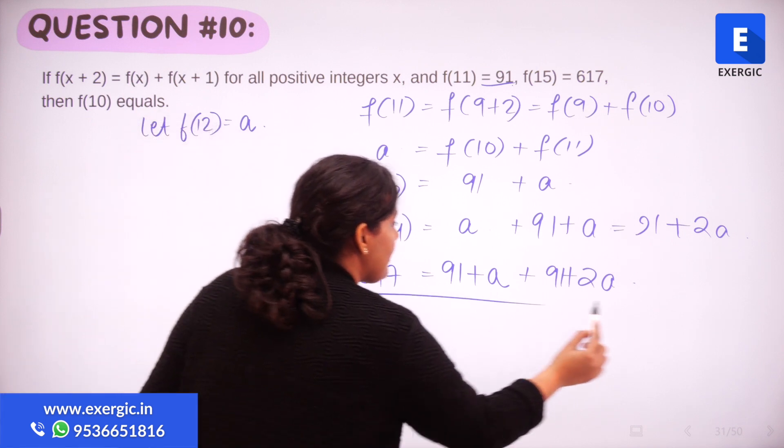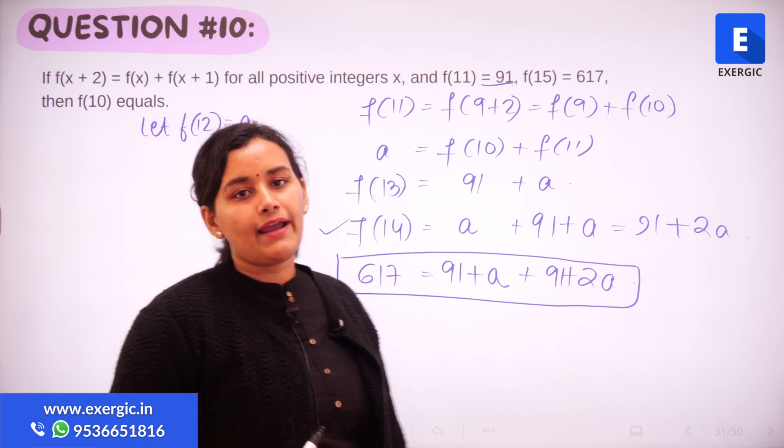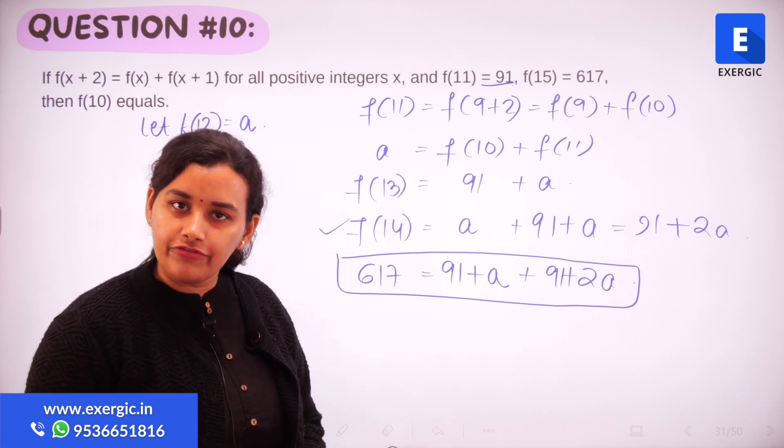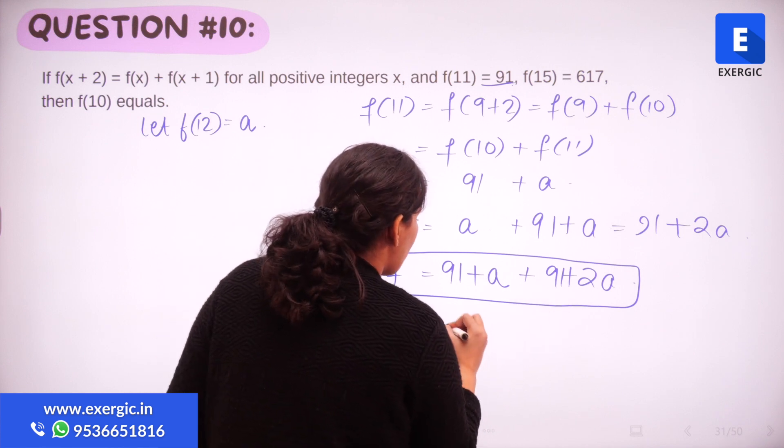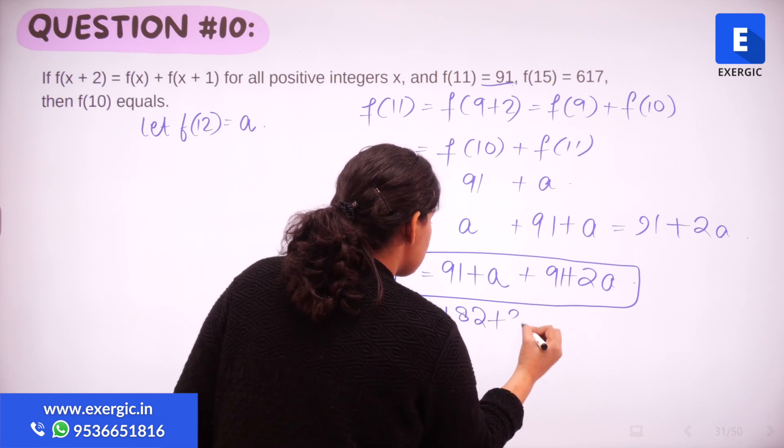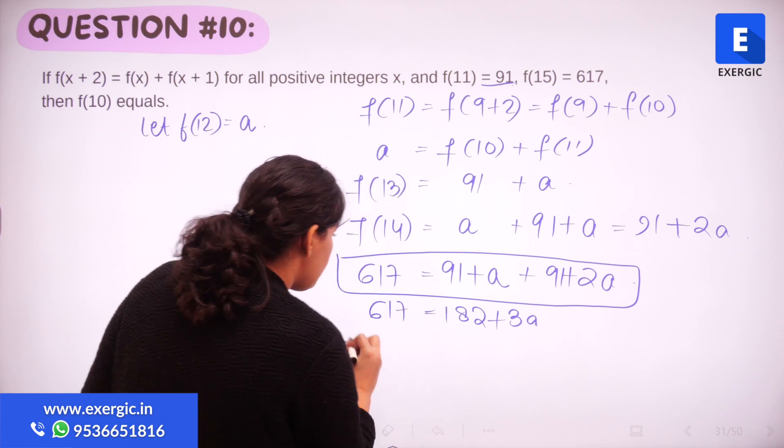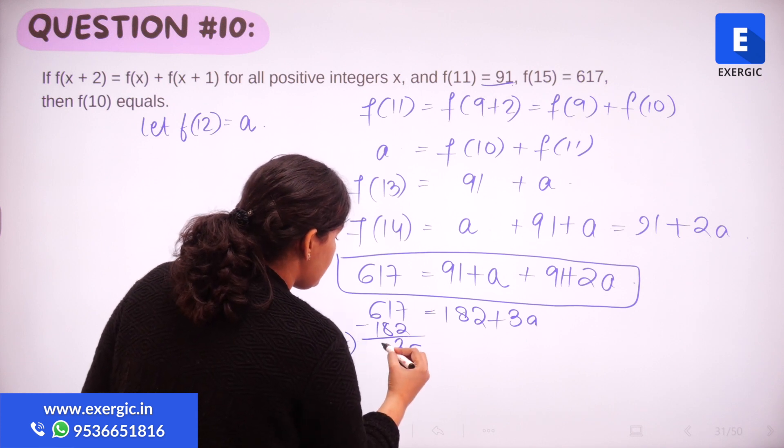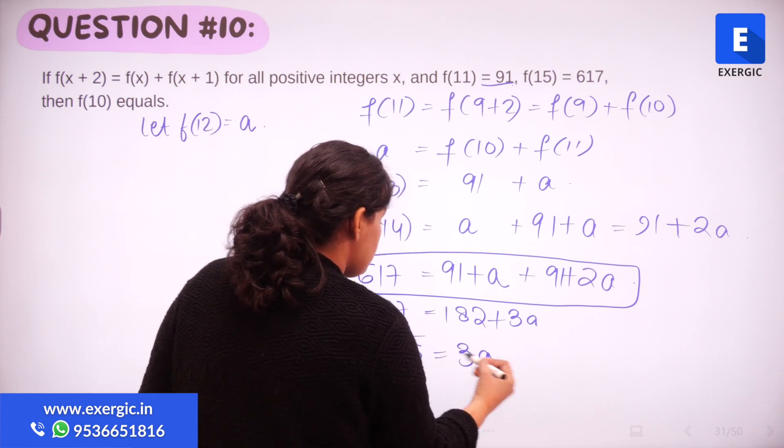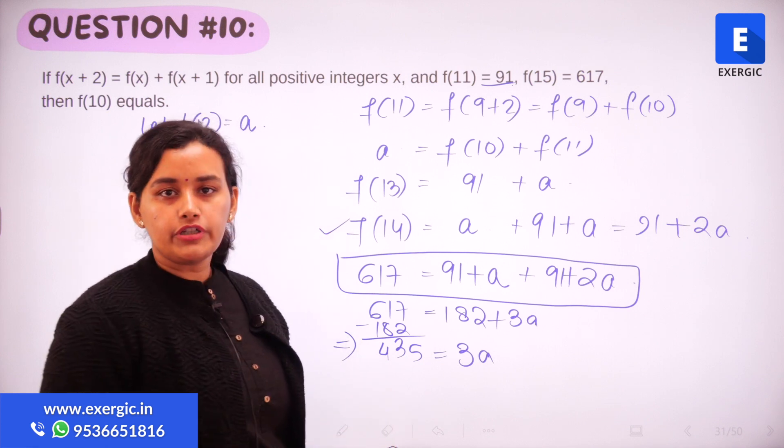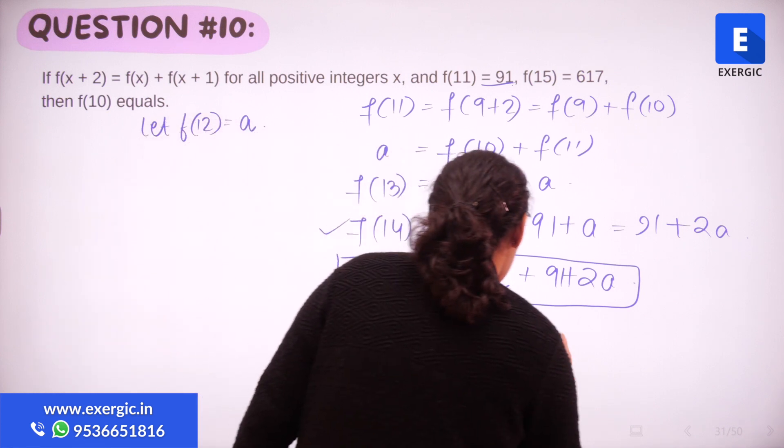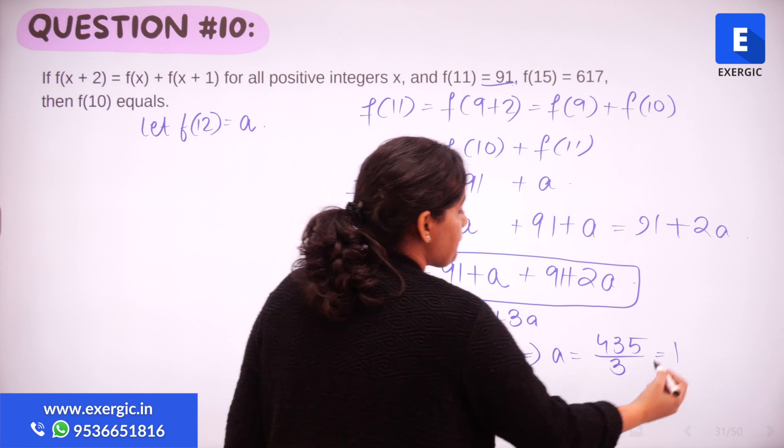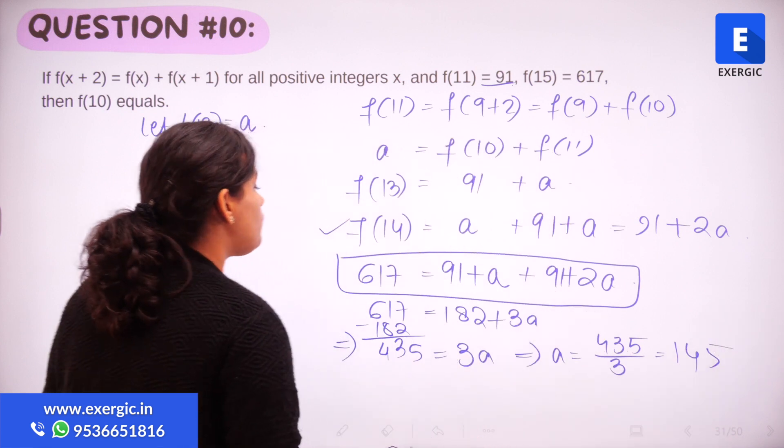So do I have an equation just in terms of a? Yes. If I simplify this I will be able to find out the value of a. So this is going to be 182 plus 3a is equal to 617. Bringing this 182 to the other side, 435 is equal to 3a. So a is going to be equal to 435 upon 3 that is equal to 145. So a is equal to 145.